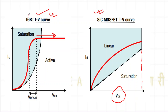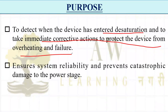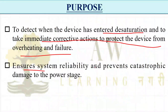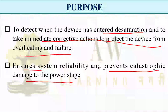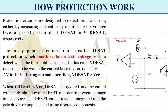So the purpose of desaturation protection is to detect when the device has entered desaturation and immediately take corrective action to protect it from overheating and failure. It also ensures system reliability and prevents catastrophic damage to the power stage — since damage to one device could damage nearby components as well.